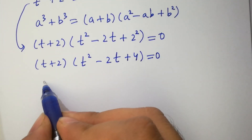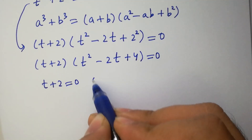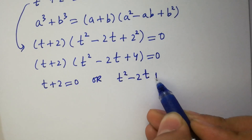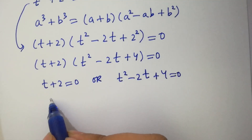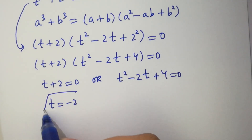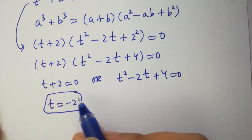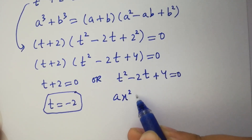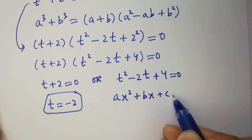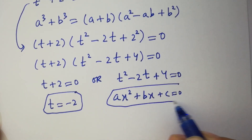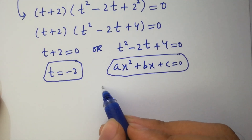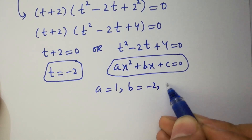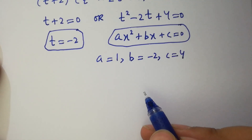Either t plus 2 equals 0, or t squared minus 2t plus 4 equals 0. So t equals minus 2, which is our first real solution. For the quadratic equation ax squared plus bx plus c equals 0, by comparing: a equals 1, b equals minus 2, and c equals 4. Apply the quadratic formula here.